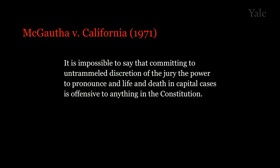Justice Harlan, writing for the majority, said that if a jury is given the awesome responsibility of whether to impose the death penalty, it will make that decision in good conscience. Justice Douglas and Brennan dissented, saying surely the states can create some guidelines — there's got to be some information given to the jury about what it can consider. But that view drew only three votes in 1971. A year later, the court came to exactly the opposite conclusion.